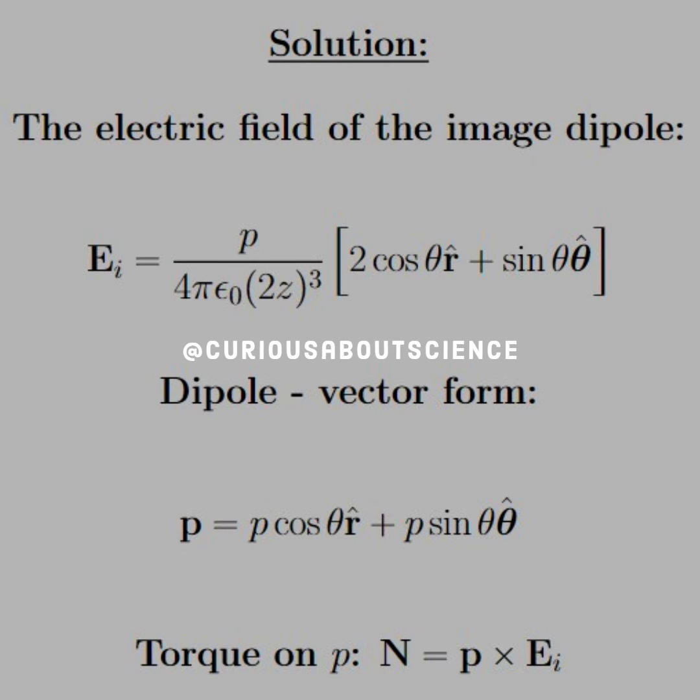Now for consideration of the dipole in question, we simply just write this in vector form, where P cosine theta is the R hat component, and P sine theta is the theta hat component. Now we are set up to plug both of these things into the torque equation, which is N equals P cross E_i.